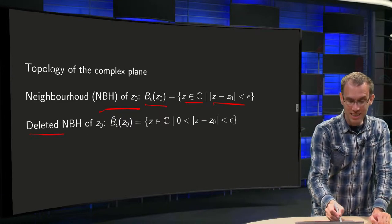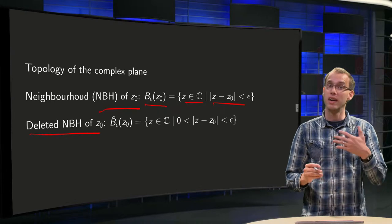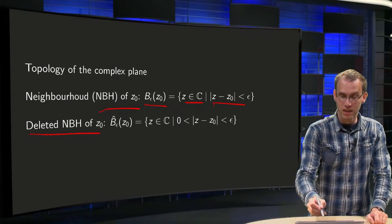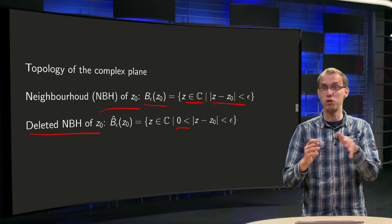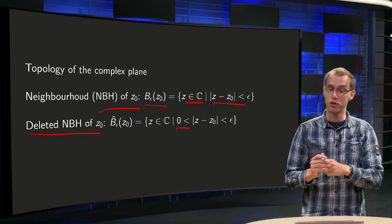Then we have something almost the same: the deleted neighborhood of z₀. It is the same except for the fact that z₀ is not part of the set. So you can write this as 0 < |z - z₀| < ε.